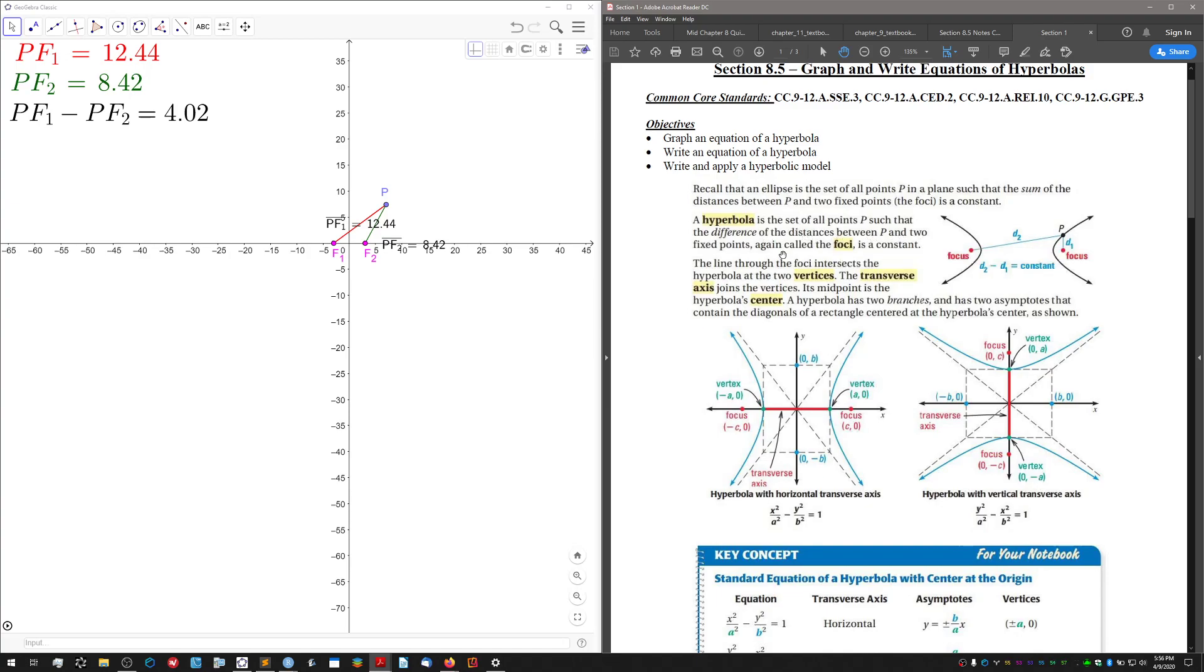Here's point P in our GeoGebra animation. The difference of this distance d2 from the point to one focus, minus the distance from the point to the other focus—if I do the subtraction d2 minus d1, I get a constant number. Every point on this hyperbola satisfies that equation: d2 minus d1 is a constant.